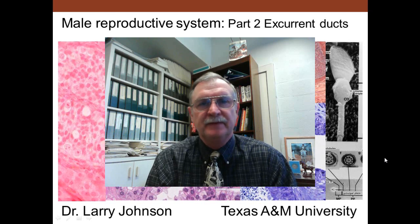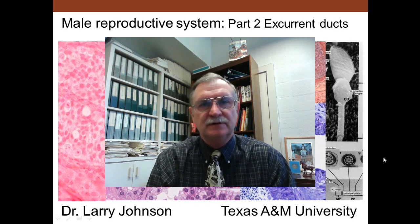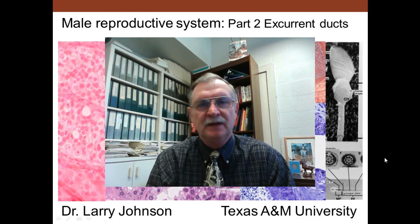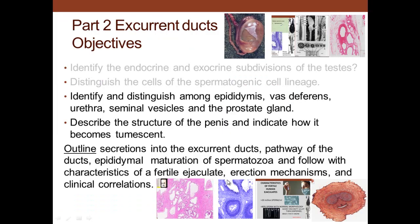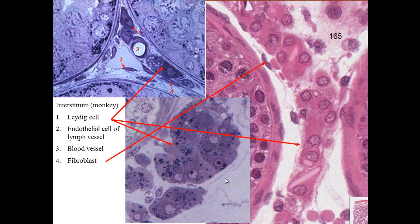Today we want to talk about the male reproductive system. There will be two parts. The first part has to do with spermatogenesis, identifying the different spermatogenic cells, and also the endocrine aspect of it. The second part has to do with excurrent ducts and secretory glands of the male reproductive system. Part 2 covers excurrent ducts - we want to identify and distinguish among the different parts of the excurrent duct and the secretory glands, describe the structure of the penis and how it becomes erect. We will start with secretions into the duct pathway, epididymal maturation of sperm, and characteristics of a fertile ejaculate, erection mechanisms, and a clinical correlation.